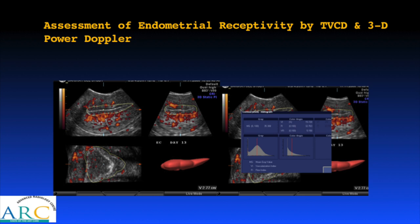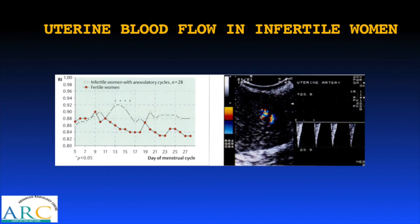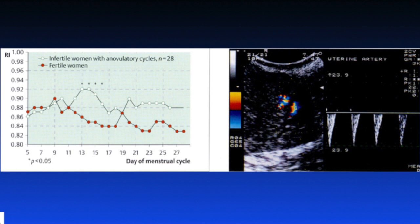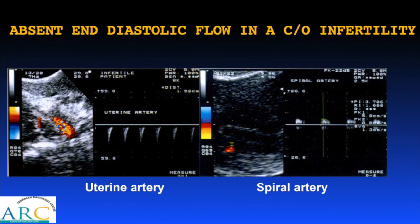Endometrial receptivity can also be studied by transvaginal color Doppler and 3D power Doppler angio, where the density of vessels within the endometrium is assessed using parameters such as the vascularization index and flow index. In infertile women, uterine blood flow is markedly reduced with a high resistance of about 0.9, compared to a low resistance of about 0.8 in normal fertile women, with spectral waveforms showing absent end-diastolic flow even in the spiral arteries.